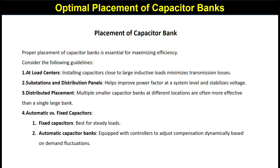Proper placement of capacitor banks is essential for maximum efficiency. Consider the following guidelines: First, place capacitor banks at load centers — install them close to large inductive loads to minimize transmission line losses. Second, placing them at a substation or distribution panel improves power factor at the system level and stabilizes voltage. Third, instead of one large single capacitor bank, use multiple smaller capacitor banks at different locations. Finally, there are two types: fixed capacitor banks, used for steady loads, and automatic capacitor banks, which are equipped with a controller to dynamically adjust compensation based on load fluctuations.